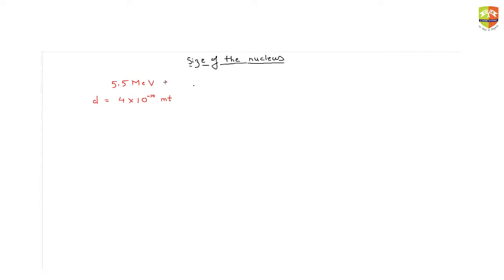You cannot directly view the nucleus and measure its size directly, so you have to find the size of the nucleus by indirect measurement. You fire an alpha particle knowing its kinetic energy and observe the distance of closest approach, which gives a rough indication of the size of the nucleus. If you increase the kinetic energy beyond 5.5 MeV, something is observed that cannot be explained by electrostatic forces alone — nuclear forces also come into the picture. Several experiments were conducted and empirically it was found that the radius of the nucleus can be written as R = R₀ A^(1/3).